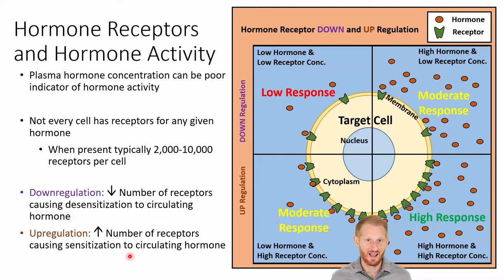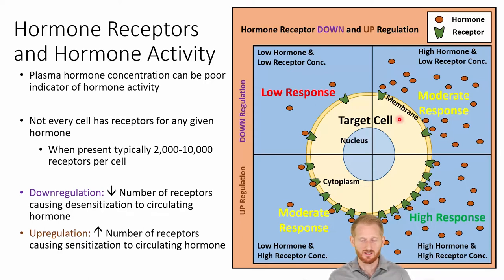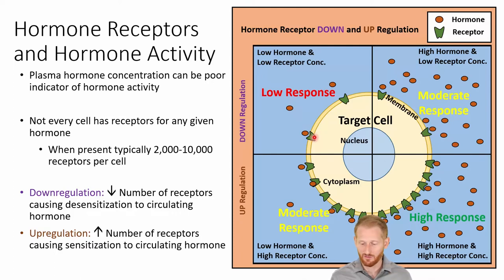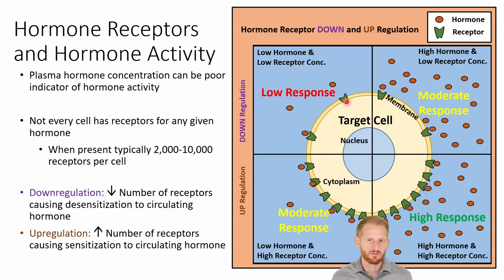This is going to increase the action of the hormone. Looking at this diagram, there are four quadrants, each showing different amounts of hormone activity based on the situation. In the upper left quadrant, we have a low response — a low hormone activity — because there is a low amount of circulating hormone and only a handful of receptors. Small circulating hormone plus a small number of receptors gives you a small hormone response.